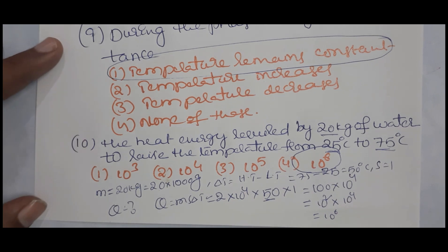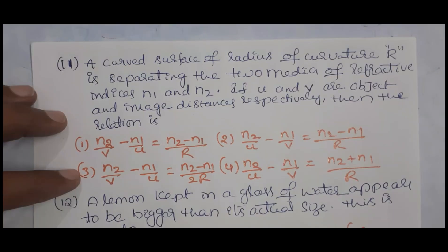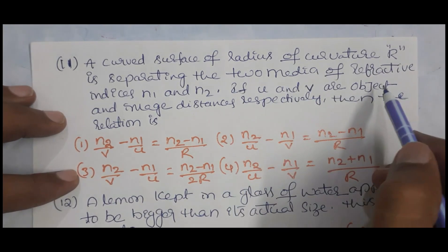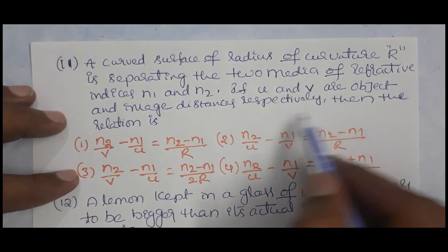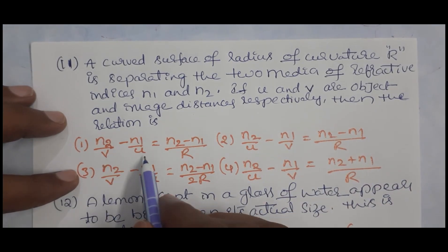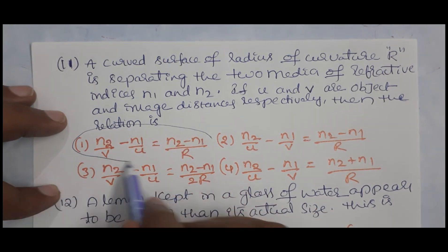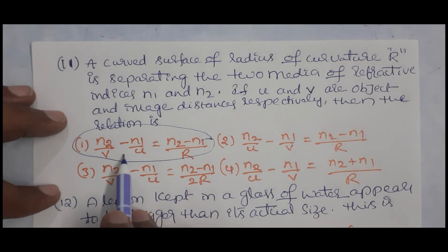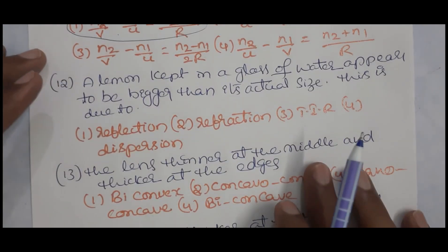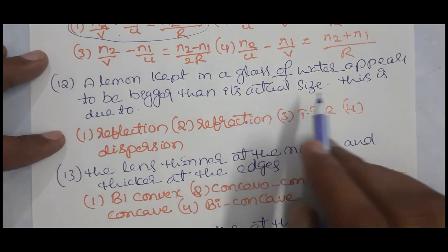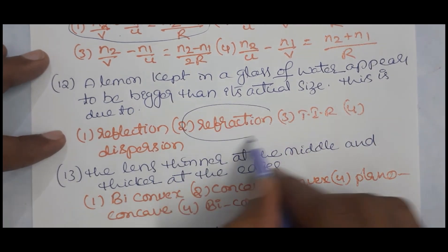A curved surface of radius R separating two media with refractive indices n1 and n2: if u and v are object and image distances, then the relation is n2/v − n1/u = (n2 − n1)/R. A lemon kept in a glass of water appears bigger than its actual size because of refraction of light.